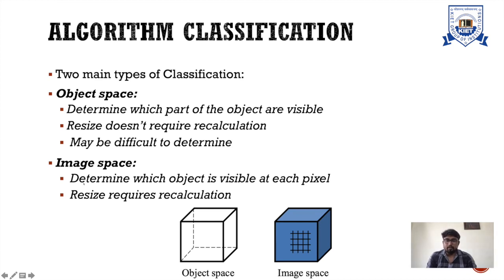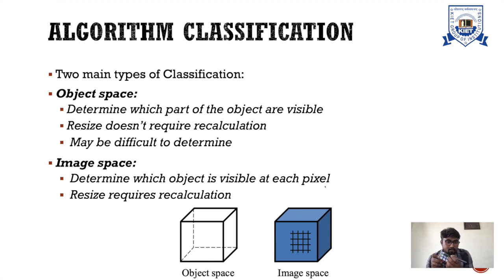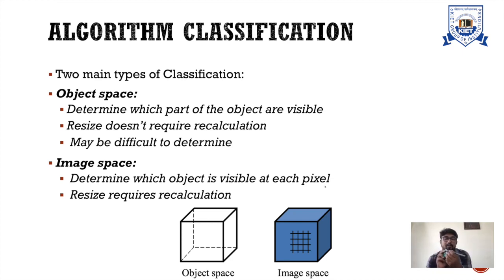Image space method also determines which object is visible at each pixel. At each pixel — suppose pixel 1, pixel 2, pixel 3, pixel 4 — the screen is divided into pixels. For a particular pixel, we see what object is visible on that pixel. Here we need to resize the object: if your object is too large, we have to resize it to fit it within a particular pixel or set of pixels.